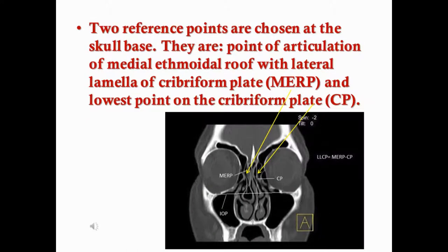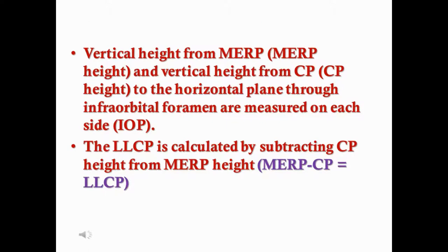Two reference points are chosen at the skull base: the point of articulation of the medial ethmoid roof with the lateral lamella on the cribriform plate, abbreviated as MERP, and the lowest point on the cribriform plate, abbreviated as CP. These two points are shown by the yellow arrow in the CT scan figure. The vertical height from MERP and the vertical height from CP to the horizontal plane through the infraorbital foramen are measured on each side.